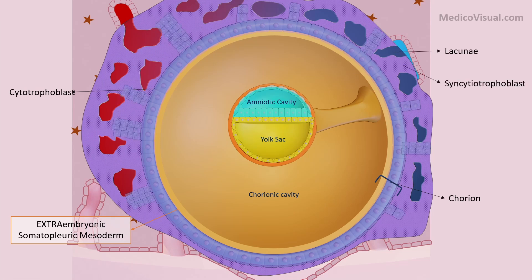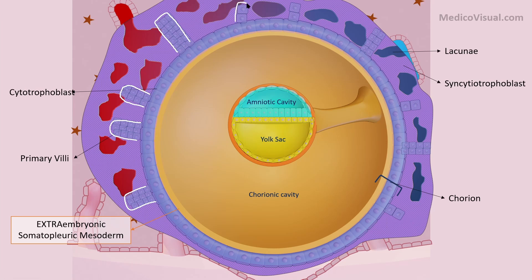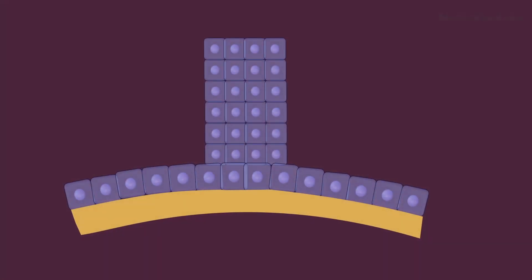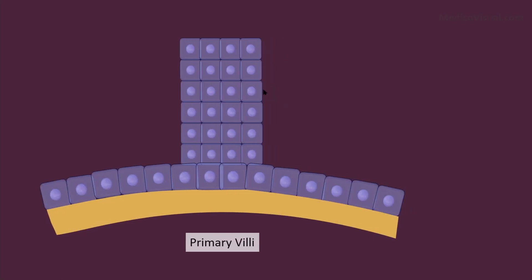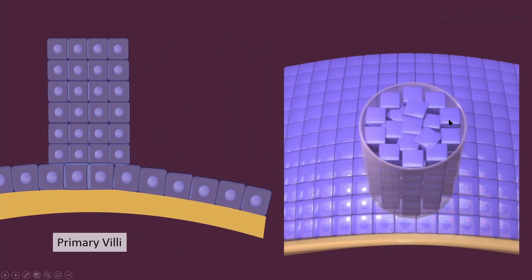As we have discussed, during the second week — at the end of the second week of development — finger-like projections arise from the cytotrophoblast. These finger-like processes that arise from the cytotrophoblast are called primary villi. In today's lecture we will discuss what happens to these villi and what stages of development they undergo. Let's enlarge a single primary villus and first see its structure. As you can see, it is a solid cord — here in this 3D diagram you can see it is a solid cord made up of cytotrophoblastic cells.